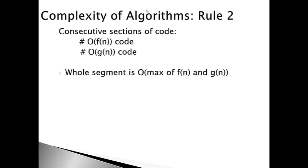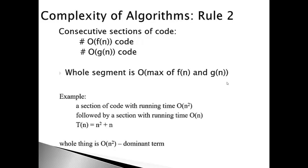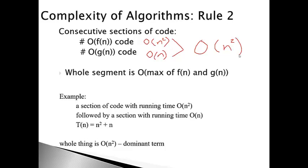Rule number two pertains to consecutive sections of code, where we run one piece of code — maybe a loop — followed by another piece of code. Each section runs in some time complexity f(n) and g(n). We say the whole segment has the complexity of the maximum of f(n) and g(n) — we take the dominant term. For example, if the first section is O(n²) and the second is O(n), we take the maximum, which is O(n²), and say the algorithm runs in O(n²) time.